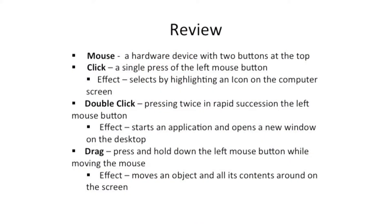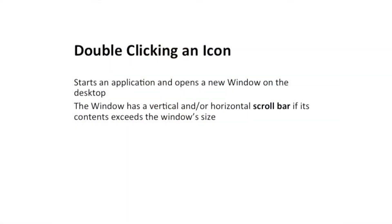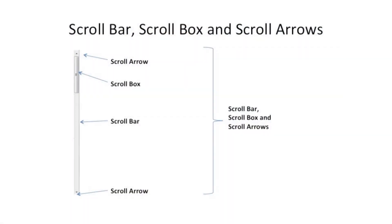There are additional terms you should be aware of. One is called a scroll — a document that may be larger than one's ability to view it all at one time. There are controls we'll cover today on how to tell whether there's something larger than what is seen on the screen. Another term is default: a setting that has been set previously that can be changed. Double-clicking an icon means to start an application and open up a new window on the desktop. The window can have vertical and/or horizontal scroll bars if its contents exceed the size of the window.